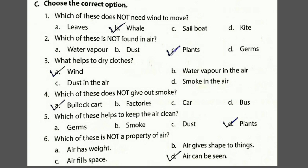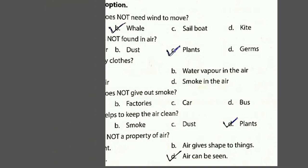Then fifth: which of these helps to keep the air clean? Options: germs, smoke, dust, or plants. Plants keep the air clean. So the answer is option D, plants. Then sixth: which of these is not a property of air? Air has weight — that is a property. Air gives shape to things — that is a property. Air fills space — that is a property. Air can be seen — we cannot see air, so that is not a property. The answer is option D, air can be seen.